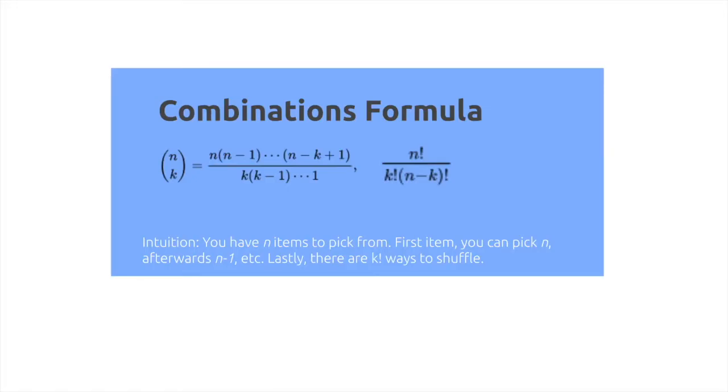The combinations formula is as follows. For n choose k, we can expand it out to be equal to n factorial divided by k factorial times n minus k factorial. The intuition for this is if you have n items to choose from, the first item you can pick any n, afterwards n minus 1, and so on.